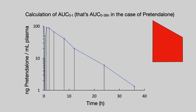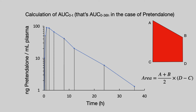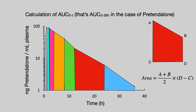The trapezoid is defined by a series of coordinates. A and B are the drug concentrations; C and D are time. We can calculate the area of a trapezoid using the standard equation: (A + B) / 2 multiplied by (D − C). We can calculate the area of all the trapezoids across the drug concentration time curve, and then add up all those areas to get the AUC between 0 and 36 hours.